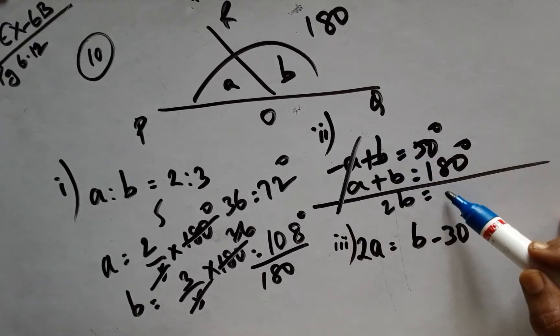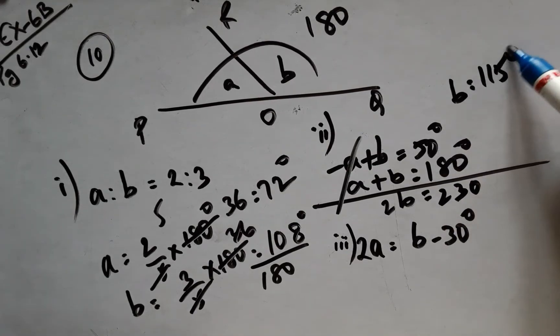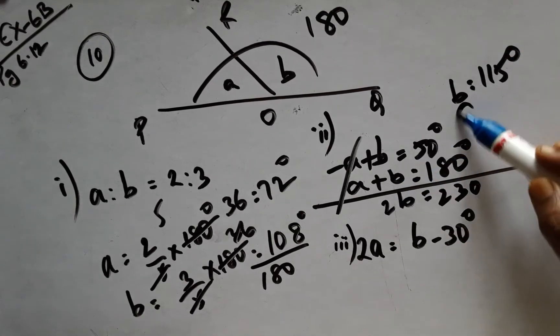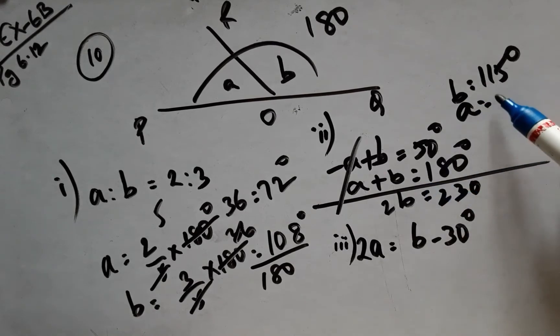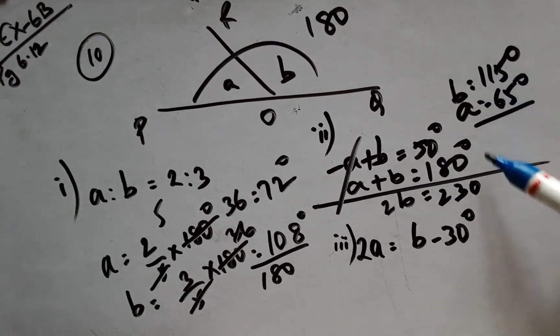2B will be 230, and my B is 115 degrees. And the other will be A, which is nothing but 180 minus 115, which comes to 65 degrees. The sum will be 180.